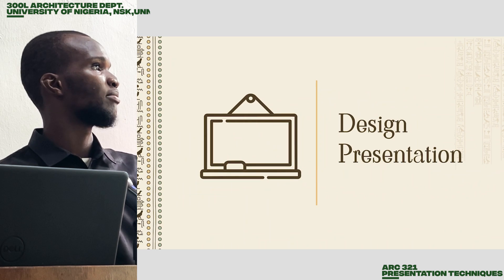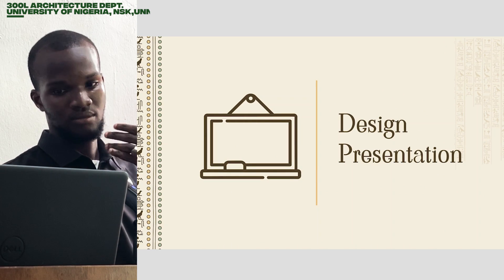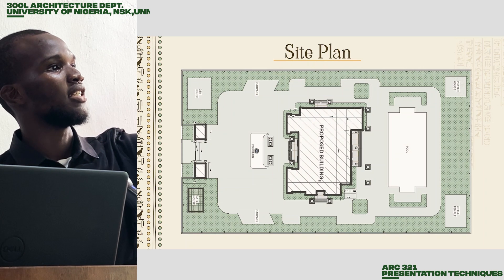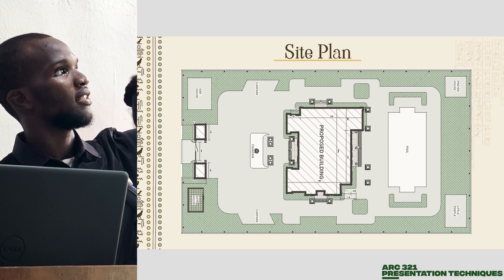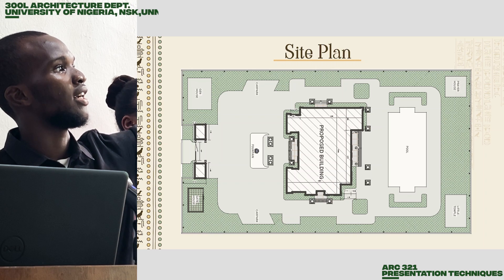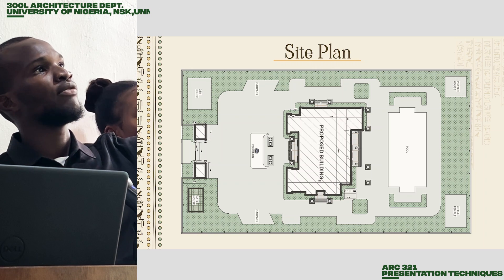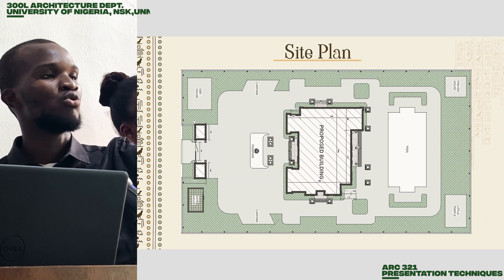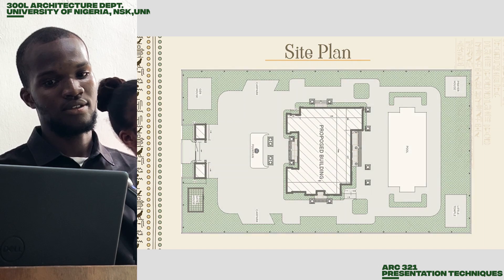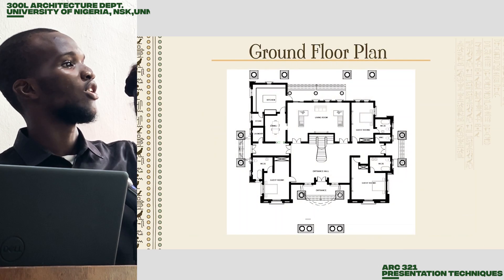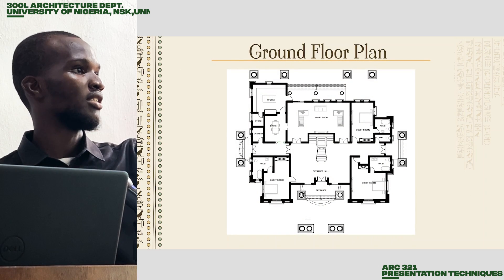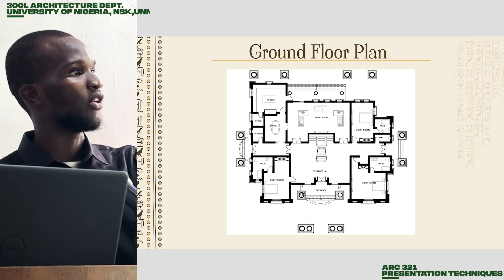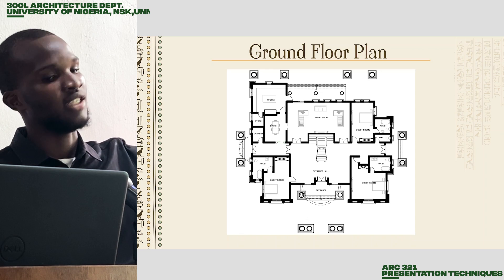Here we have the main design presentations of the floor plans. The proposed site has the building centered in the middle, with the generator and gate house at the left and right hand side of the major road. The ground floor plan includes the entrance hall, living room, guest room on the ground floor, and the kitchen on the left hand side of the building.